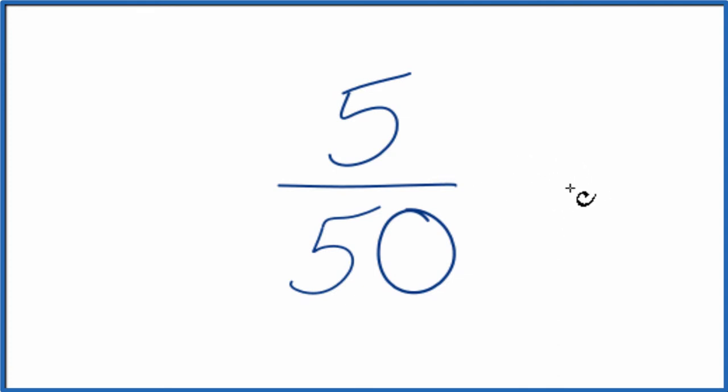To do that, we need to find a common multiple. We're looking for the greatest common multiple, something that goes into 5 and 50 evenly.